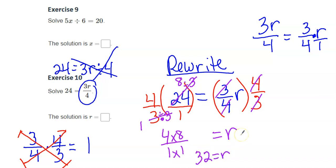And again, to check it, I can go back to the original equation. I know the left side equals 24. I'm going to multiply 3 times 32 and divide that number by 4 to see if it equals 24.